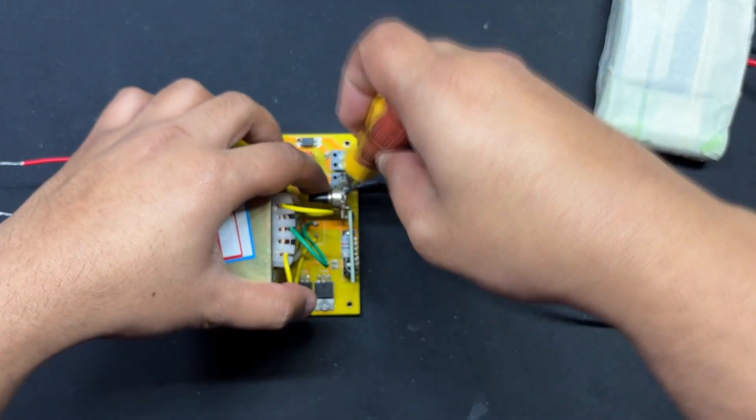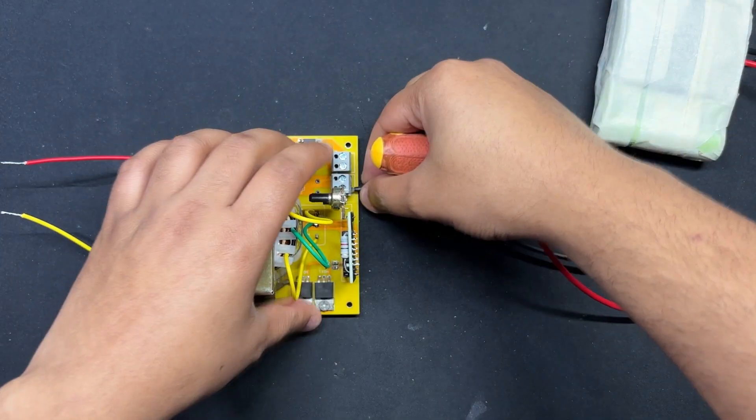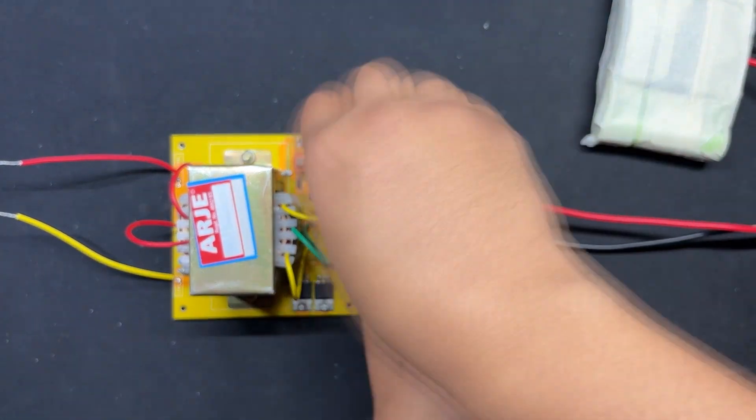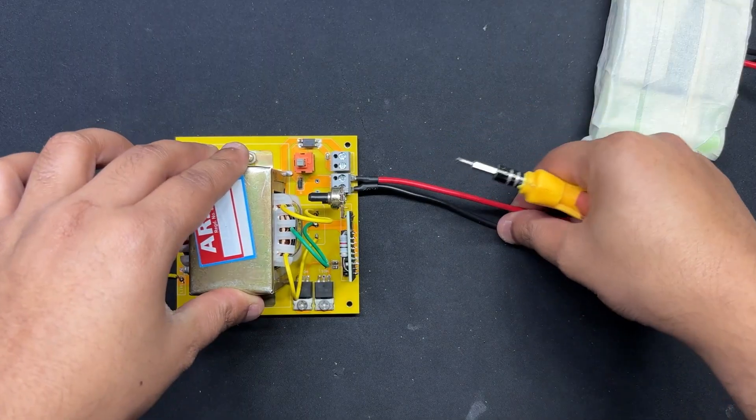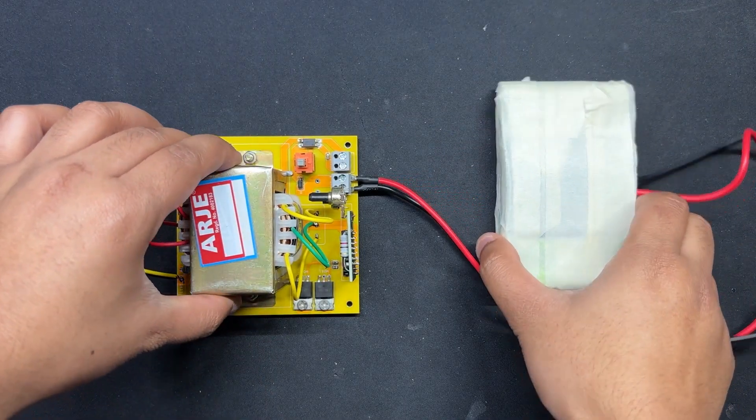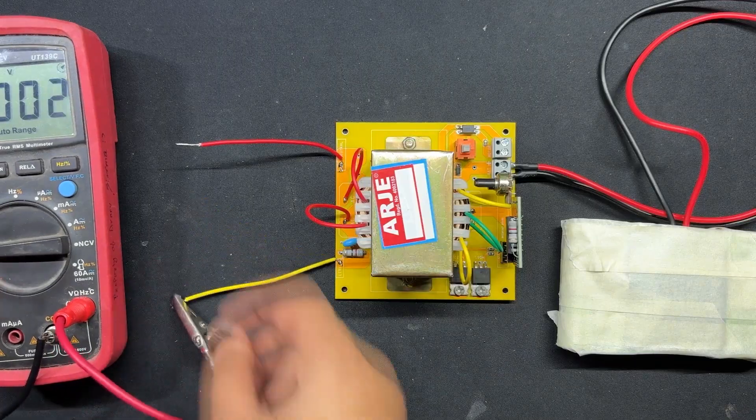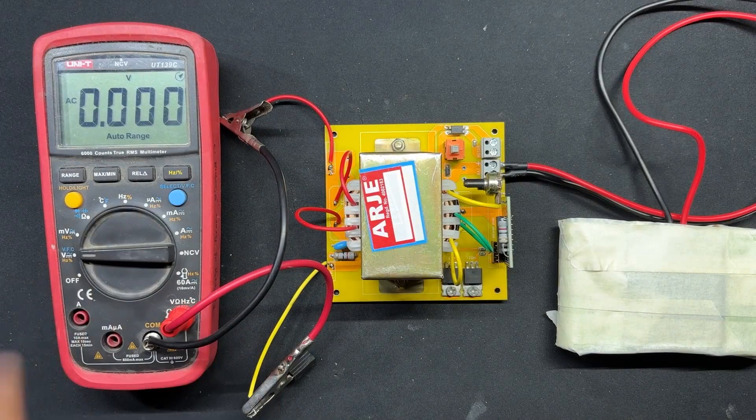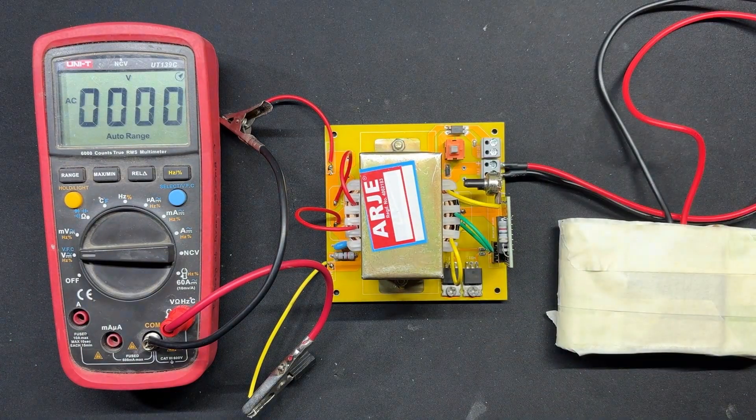We begin the testing process by connecting the battery's VCC and ground terminal to the CON2 screw terminal connector installed on the circuit. Next, we connect a multimeter to transformer output terminal and set it to read AC voltage.